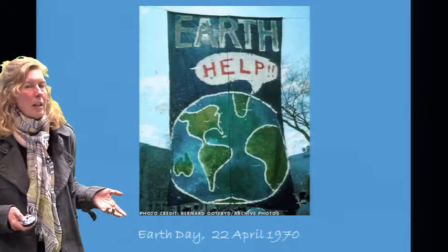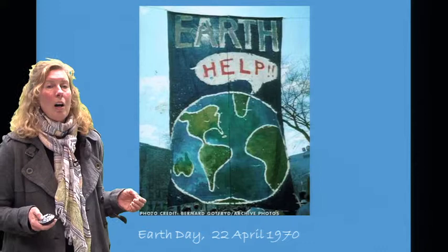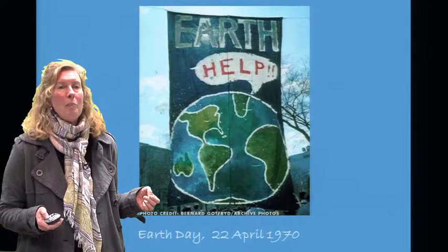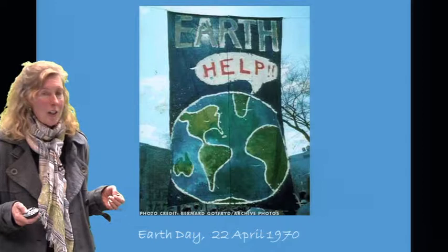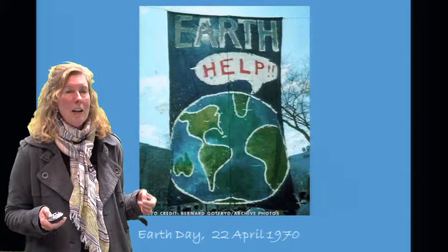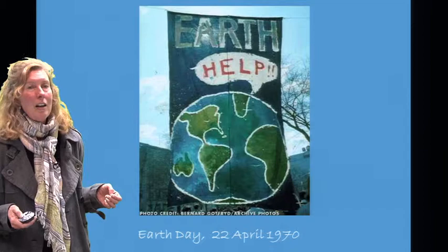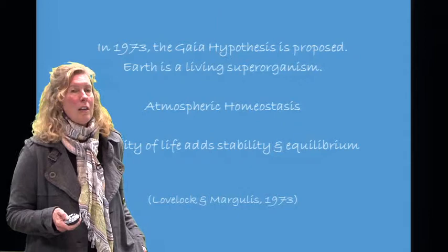Two years later, in 1970, Earth Day was really a cry for help. People noticed there were extinctions, pollution, and overpopulation. On this day, 20 million Americans demonstrated across the country for a more sustainable planet. Outcomes of this in the Nixon administration in the early 70s include the formation of the EPA, the Environmental Protection Agency, the Clean Air and Water Acts, and the Endangered Species Act.